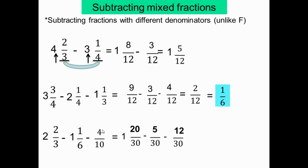So you are going to have the same denominator. You are going to get: 20 minus 5 is 15, minus 12 is 3. So you are going to have 1 and 3 sur 30. So you are going to simplify 30: 3 divided by 3 is equal to 1, 30 divided by 3 is equal to 10. So the answer is 1 and 1 sur 10.